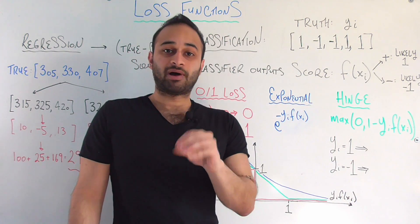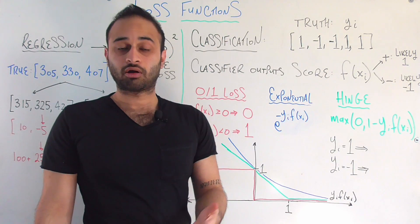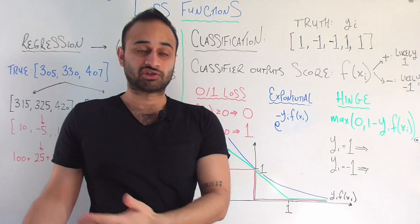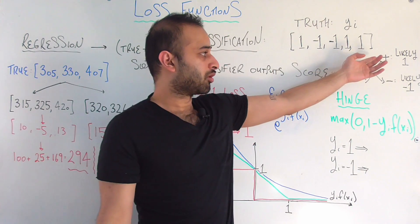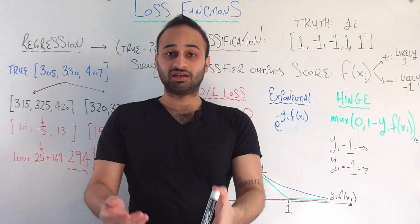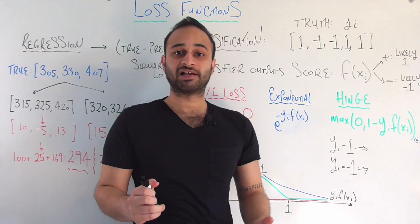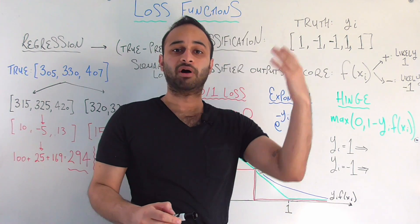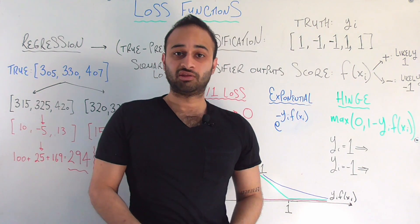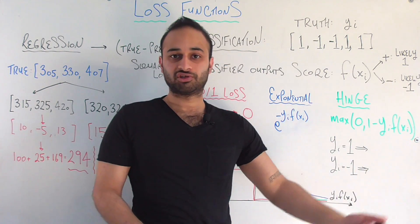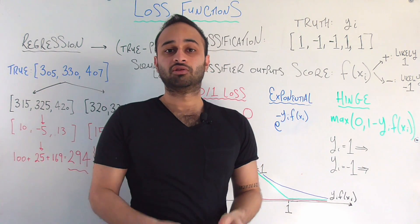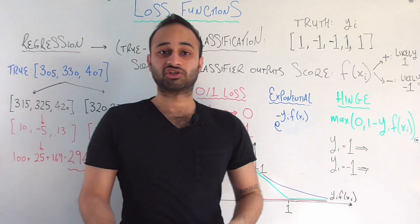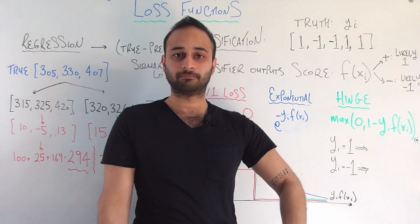We put x sub i into our classifier and get a score called f of x sub i. The higher this score is — the closer to positive infinity — the more likely the classifier is saying this observation should be classified as class 1, meaning this person will finish the marathon in above average time. Conversely, the more negative this score is — the closer to negative infinity — the more confident the classifier is that this person will finish in below average time.